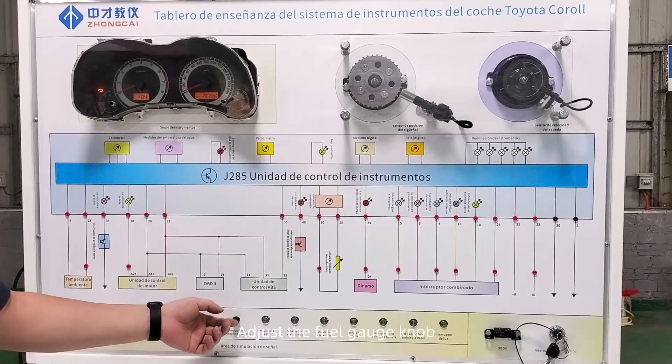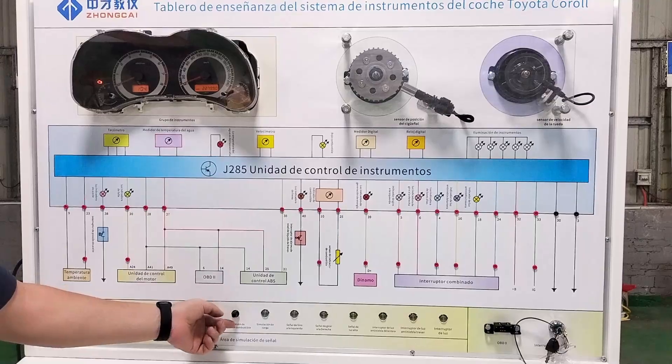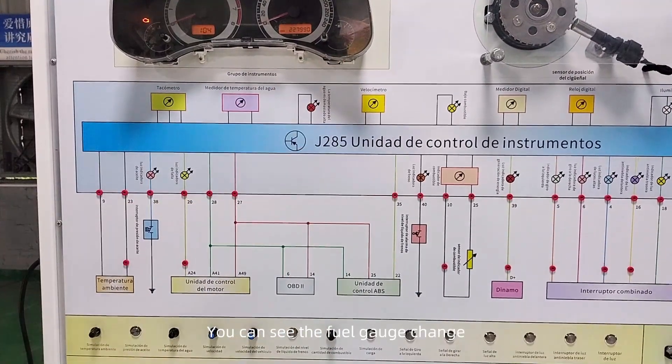Adjust the fuel gauge knob — you can see the fuel gauge change on the instrument panel.